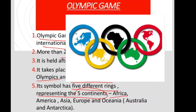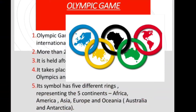Although we have 7 continents, the Olympics groups them into 5. The first is Africa, then America — which includes both North and South America — then Asia, then Europe, and then Oceania, which includes Australia and Antarctica. So 5 different rings represent these 5 continents.